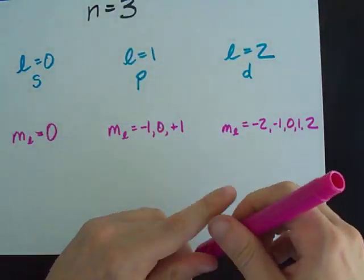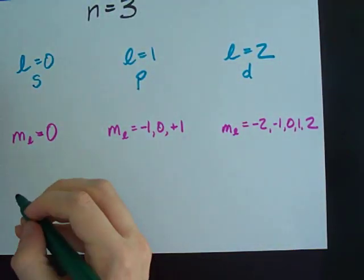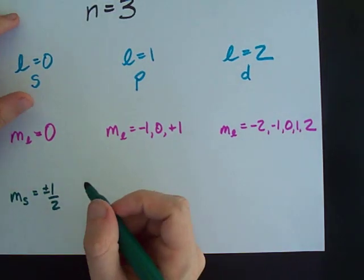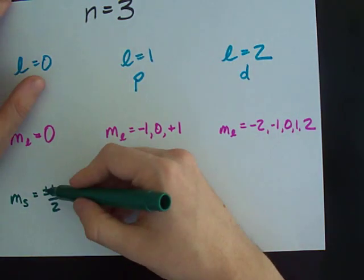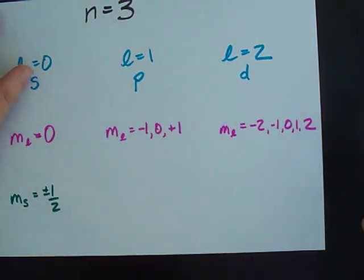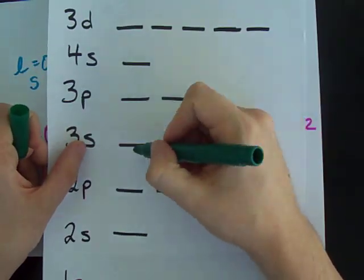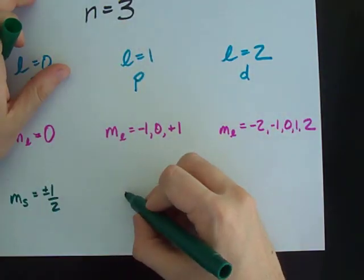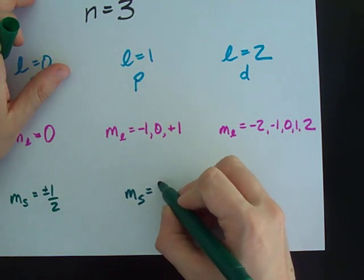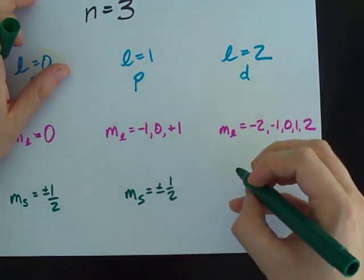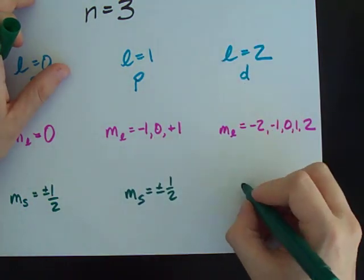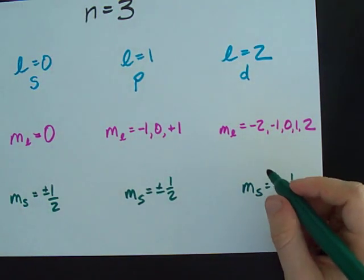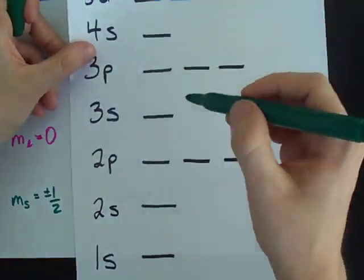Now, for each of those MLs, MS, we say, can be plus or minus one half. So, that really means that for each of these MLs, or each of these dashes, we can only jam two electrons in each. One happens to be spin up, the other happens to be spin down. But MS here is plus or minus one half for each of those MLs. MS here is plus or minus a half. You can only jam two electrons in each of these orbitals.